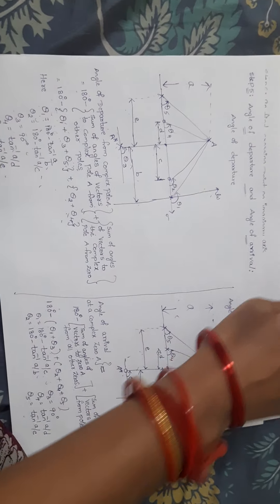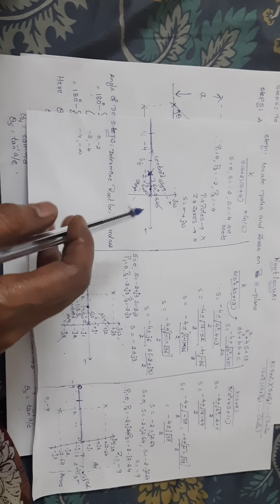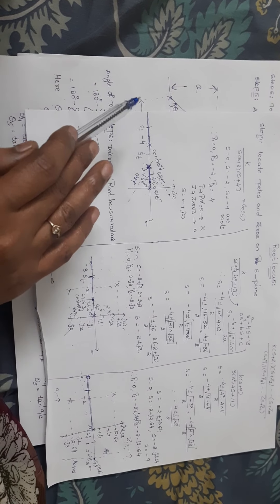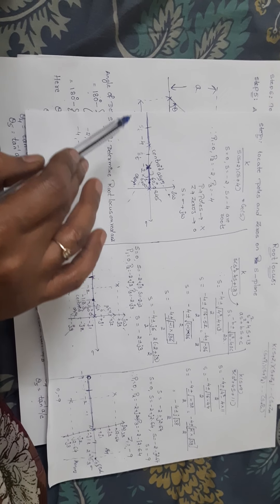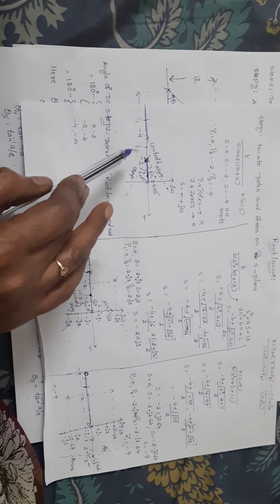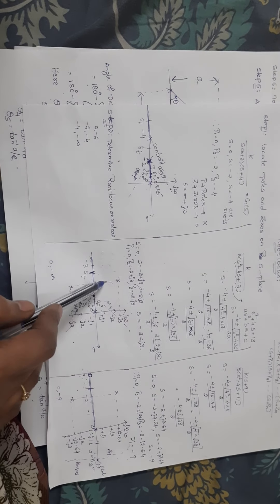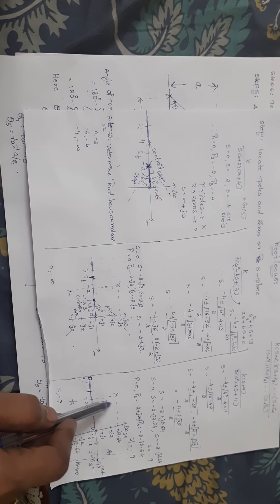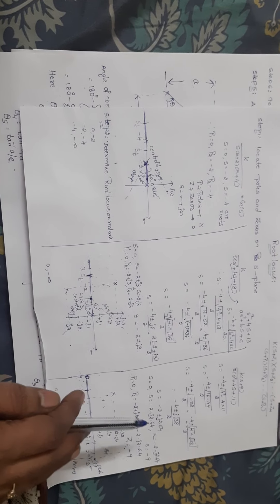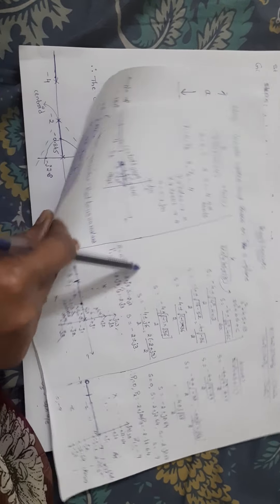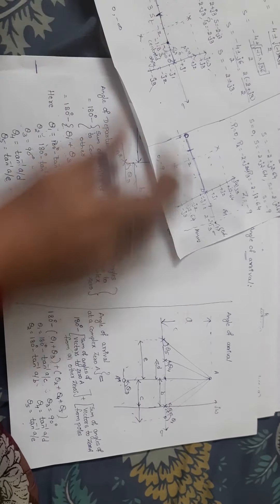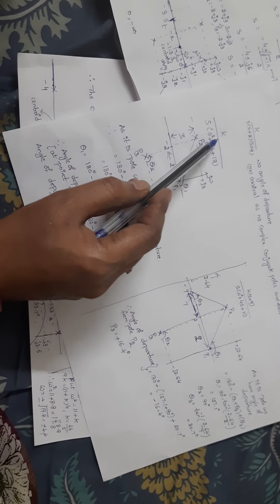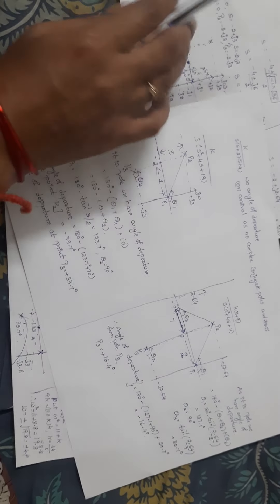Now let us see which problems require angle of departure and angle of arrival. In the first problem there is no complex conjugate pole, so no angle of departure and no angle of arrival. For the second and third problems we have angle of departure, and no zeros means no angle of arrival. Let us calculate for one example — I will take the second example.